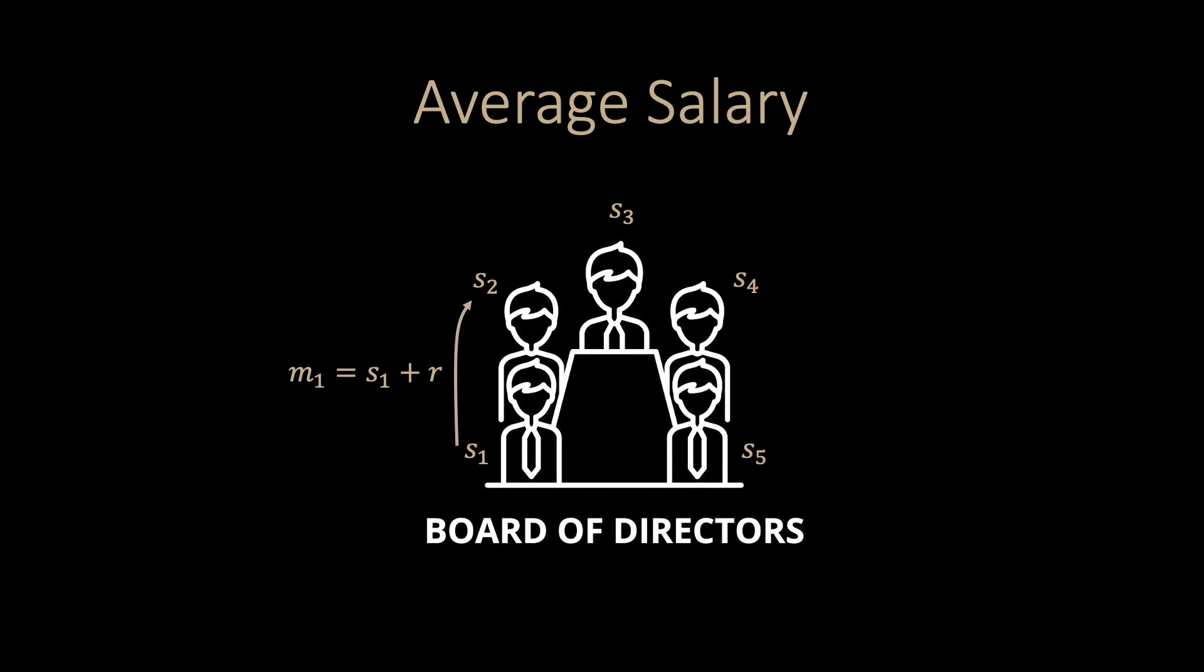The algorithm works as follows. The first director chooses a large random number and adds their salary S1. Then the first director sends this sum, M1, to the second director.